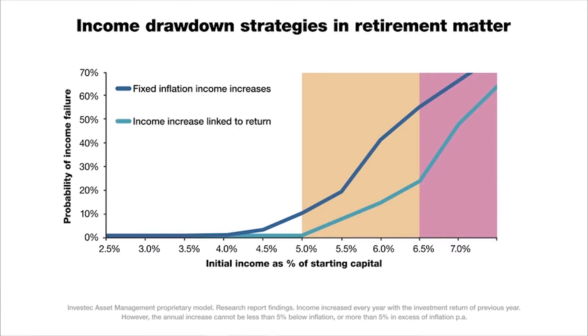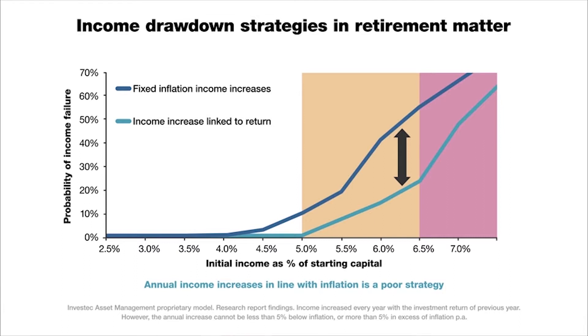The lighter blue line illustrates a different income strategy: the living annuity where the pensioner bases their annual increase on what the markets did the previous year. If markets were down, the pensioner takes no increase; if up, the increase is linked to market performance, capped at 10%. This strategy performs substantially better — it looks as if you can start a pensioner with almost 1% extra income on this strategy and get the same probability of failure as the fixed inflation increase. The key message: link income increases to the prior year's portfolio performance rather than giving a fixed inflation increase every year.